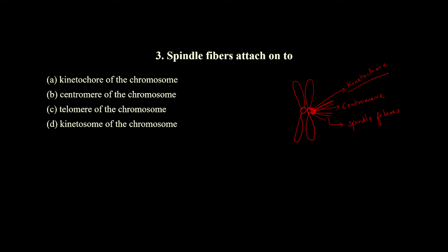Option A — kinetochore of the chromosomes — yes, obviously the spindle fiber attaches to the kinetochore. Option B — centromere of the chromosomes — the spindle is not attached there, so it is wrong. Option C — telomere — which is present at the end of the chromosome — also wrong. Option D — kinetosome — a structure present in protozoans with flagella — wrong. The correct answer is kinetochore of the chromosome.